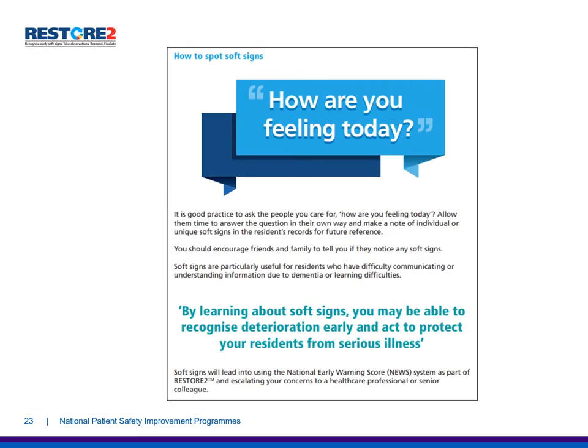It's good practice to ask the people you care for 'how are you feeling today?' Allow them time to answer in their own way, and make a note of individual or unique soft signs in the resident's records for future reference. You should also encourage friends and family to tell you if they notice any soft signs — after all, they're going to know the resident even better than you do. Soft signs are particularly useful for residents who have difficulty communicating due to dementia or learning difficulties. By learning about soft signs, you may be able to recognise deterioration early and act to protect your residents from serious illness, and escalate your concerns to a healthcare professional or senior colleague.